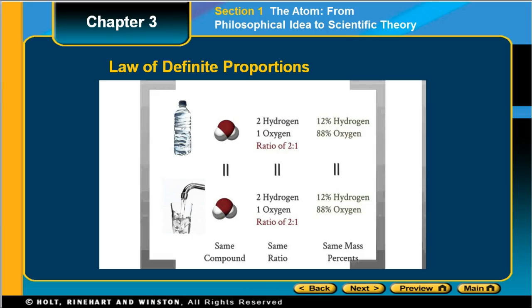The law of definite proportions is shown here: hydrogen—two hydrogens and one oxygen, a ratio of 2:1—is 12% hydrogen to 88% oxygen. In a water bottle or out of the tap, it's the same compound, the same ratio, the same mass percent.